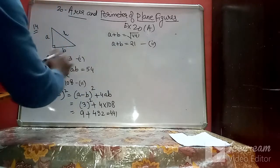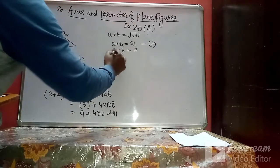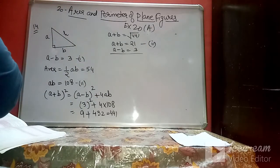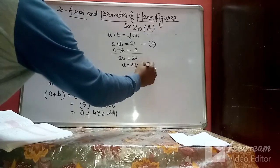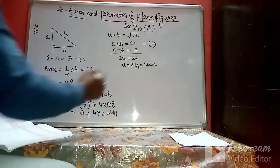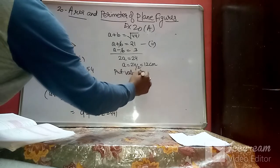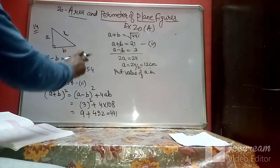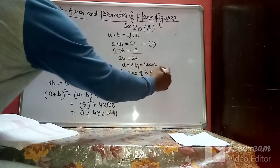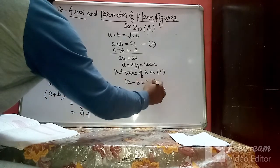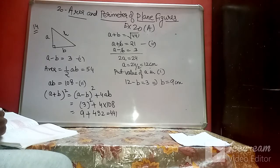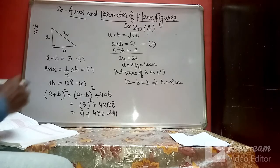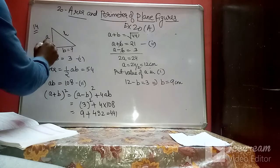Solving the simultaneous equations a + b = 21 and a − b = 3: adding gives 2a = 24, so a = 12 cm. Substituting back: 12 − b = 3, so b = 9 cm.